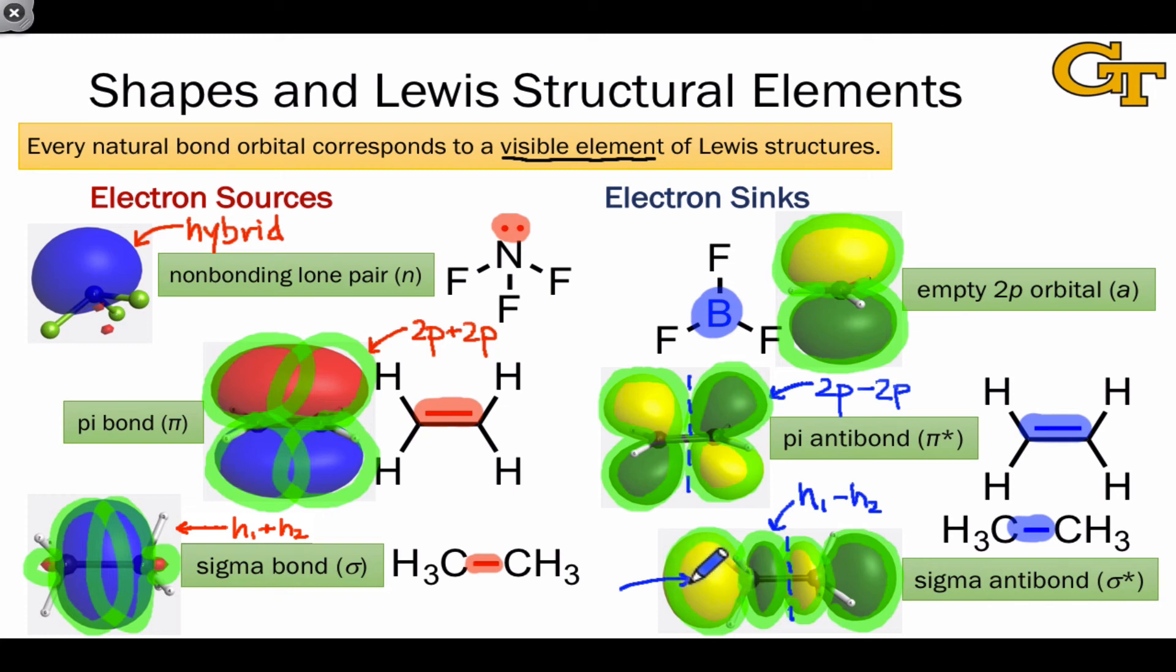And an important thing to notice about the sigma-antibonding case is that now, what was a little nub on the outside of the bonding orbital is a very large lobe in the sigma-antibonding orbital. The most important lobes within this orbital are often outside of the bond. This has important implications for the geometry of reactions involving sigma-antibonds, as we'll see later.